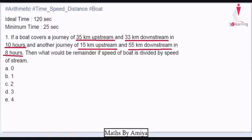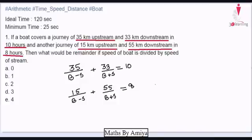Hi! Today we discuss a question of time, speed, distance, stream and boat. This video is not a concept video but a suggestion video. When we have a journey of upstream and downstream with a time, and another journey of upstream and downstream with a time, and we have to find speed of boat and speed of river, we generally make equations of b minus s for upstream and b plus s for downstream, solve the equations, and get the value of b and s.